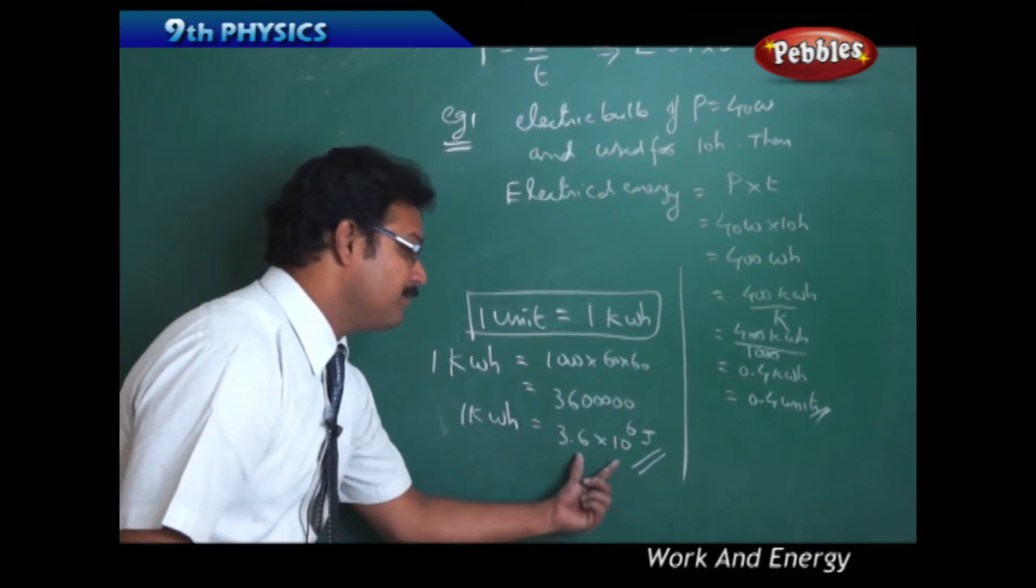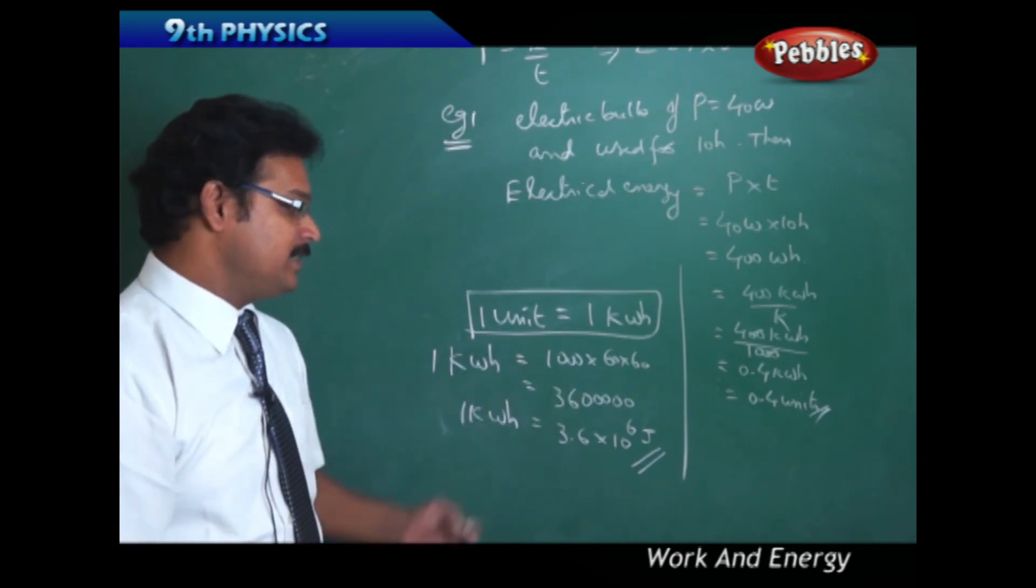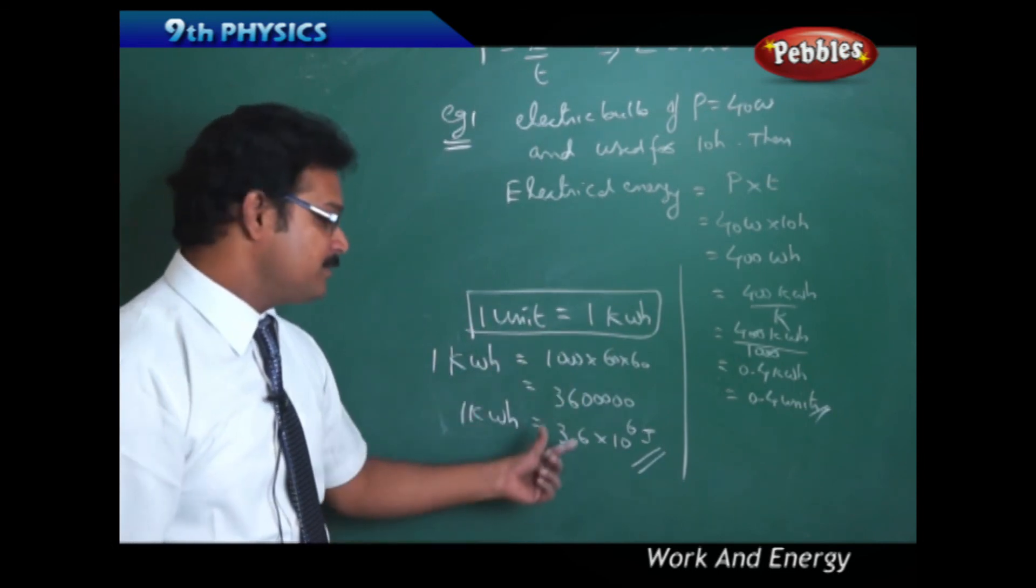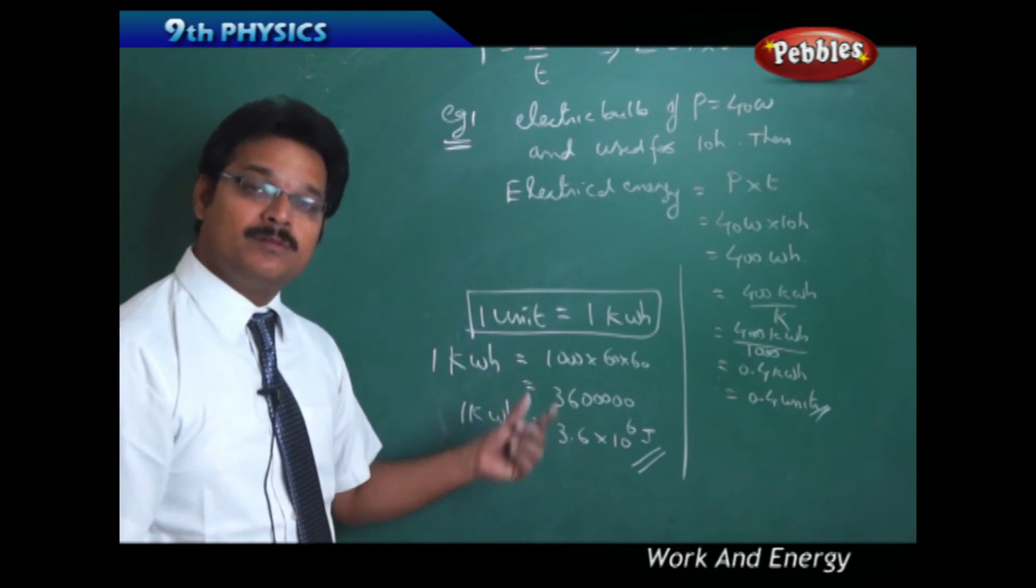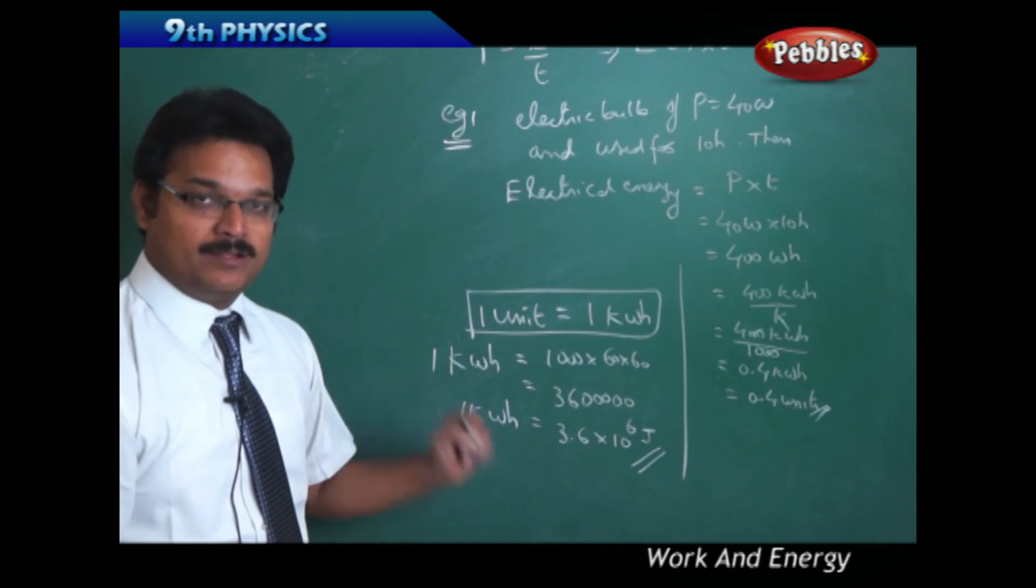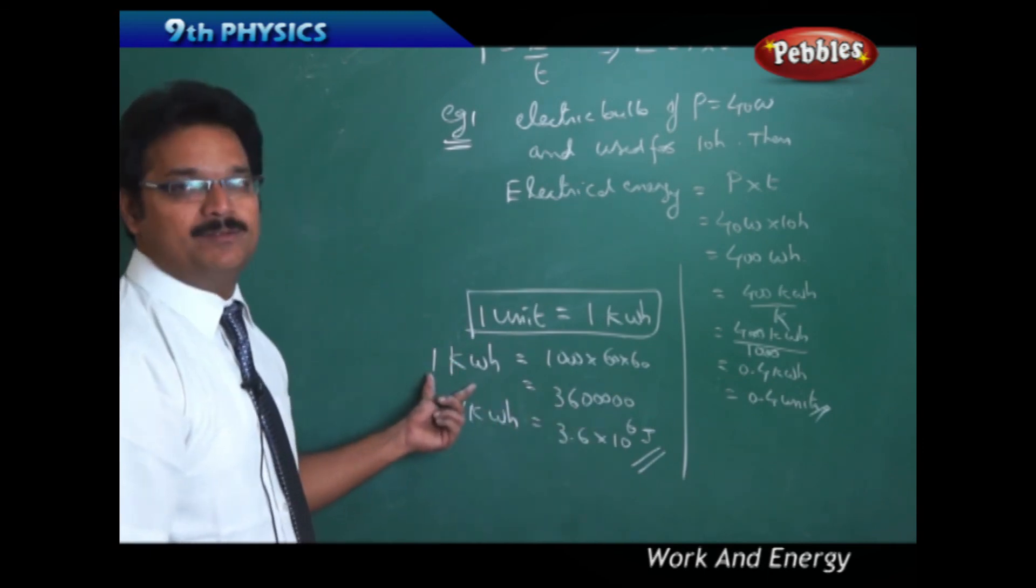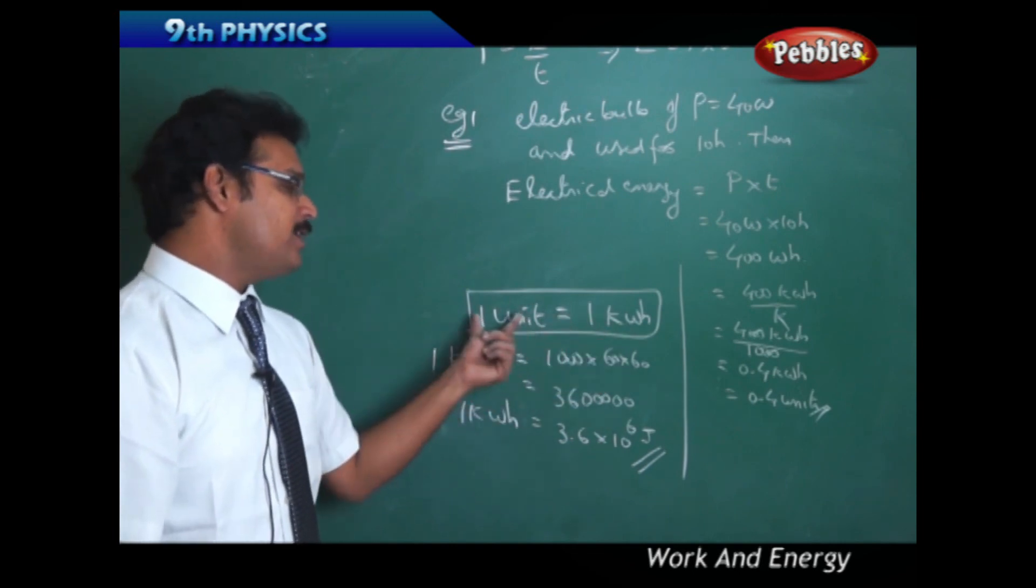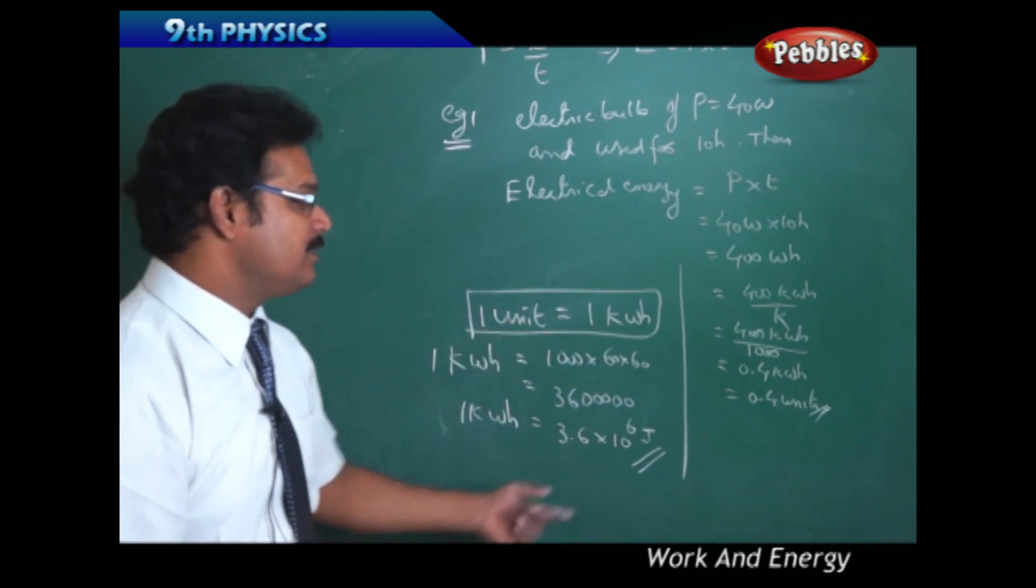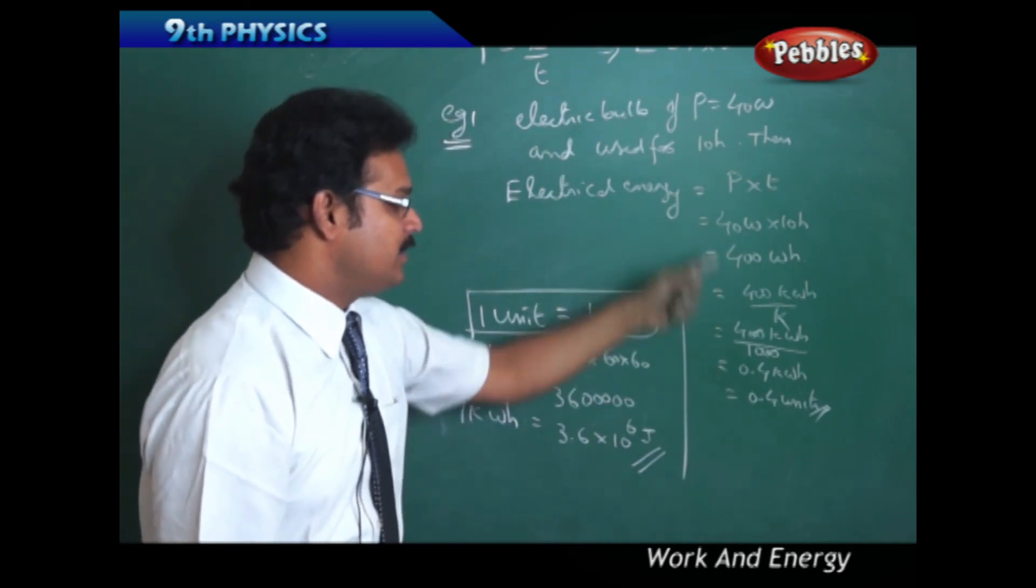So this is very big number. So in electricity bill if the person gives the amount of energy consumed in terms of this number, it is very difficult to remember, very difficult to manipulate. That's why what the scientist told: convert this 3.6 million joules into 1 kWh and take 1 kWh as 1 unit of consumption. And hence we have done this numerical and we have shown the amount of energy consumption in terms of units.